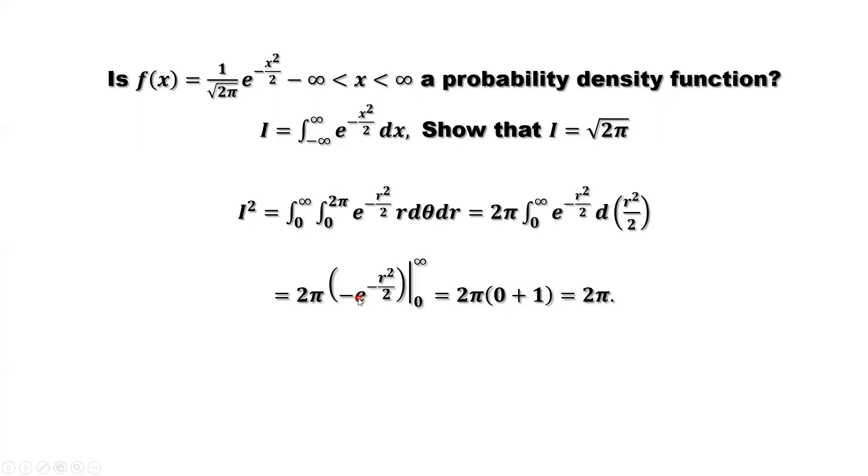Minus. Minus one. Originally, you have negative. Negative minus one is positive. Positive one. Equals 2π.